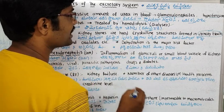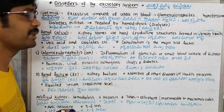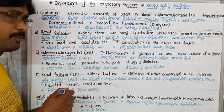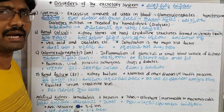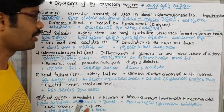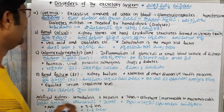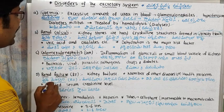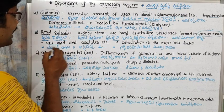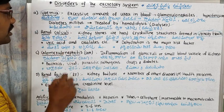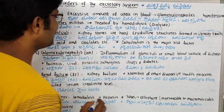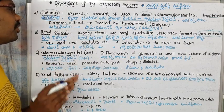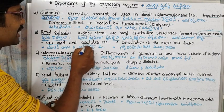These renal calculi are present in the urinary tract. Uric acid is a factor involved in kidney stone formation, and stones can vary in size — sometimes a little bit larger.